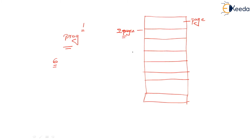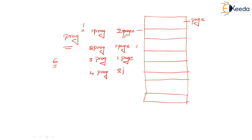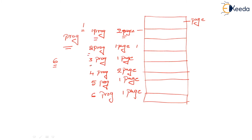The second program takes only one page, the first program takes two pages. The third program also takes one page. The fourth program is again taking two pages. The fifth program is taking one page. The sixth program is taking one page. You can clearly see the size of each program is different from the others. So here, each program's allocation is called a segment.